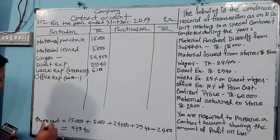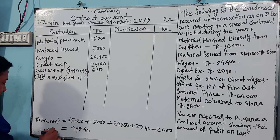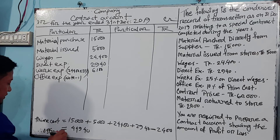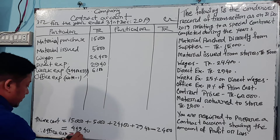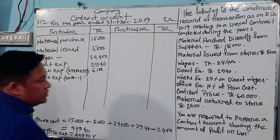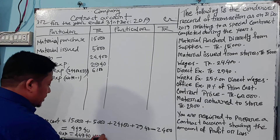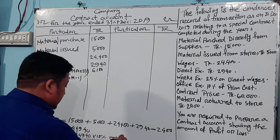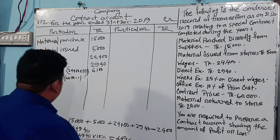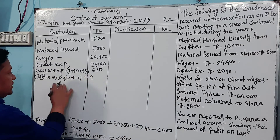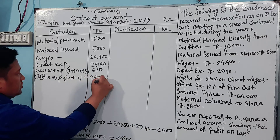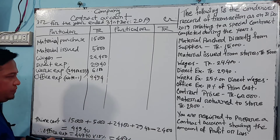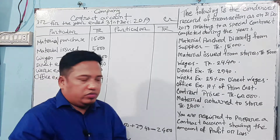We calculate office expenses as 10% of prime cost. 10% into 44,940 equals Taka 4,690. We have to write the office expenses as 4,690. Office expenses are more than 1,000.